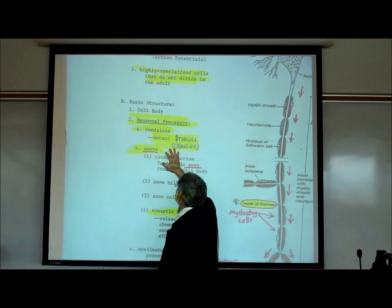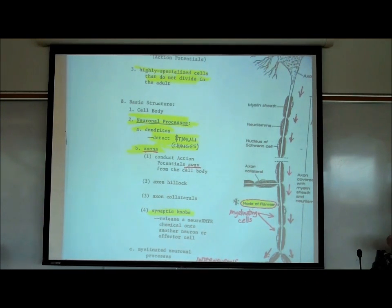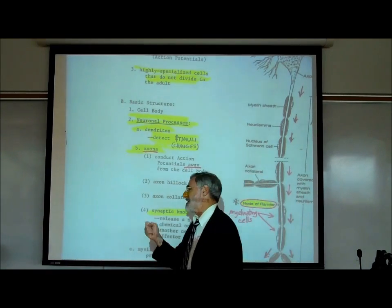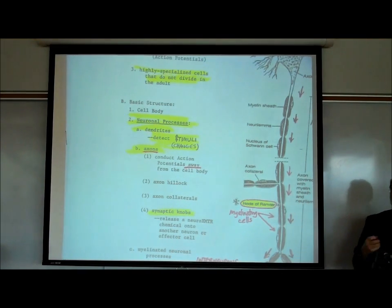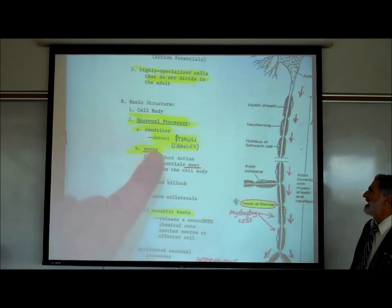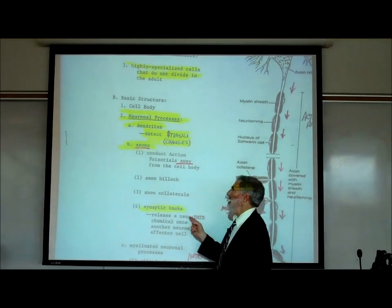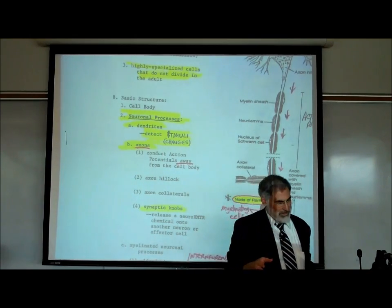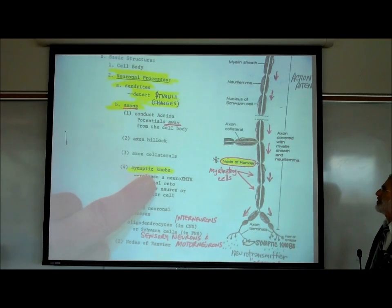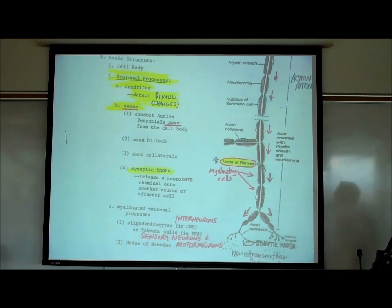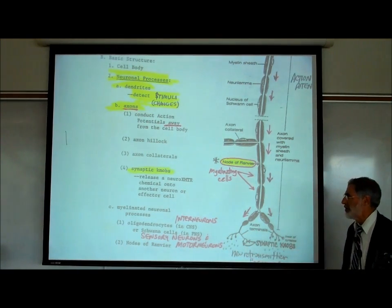Dendrites detect stimuli — they detect environmental changes such as chemicals, temperature, sugar levels, or pH. That's what dendrites do. The axons conduct action potentials away from the cell body — axons starts with 'A,' conducting action potentials away. The axons terminate in little knobs called synaptic knobs, and when the action potential reaches the synaptic knobs, it causes the synaptic knobs to release a chemical called a neurotransmitter.